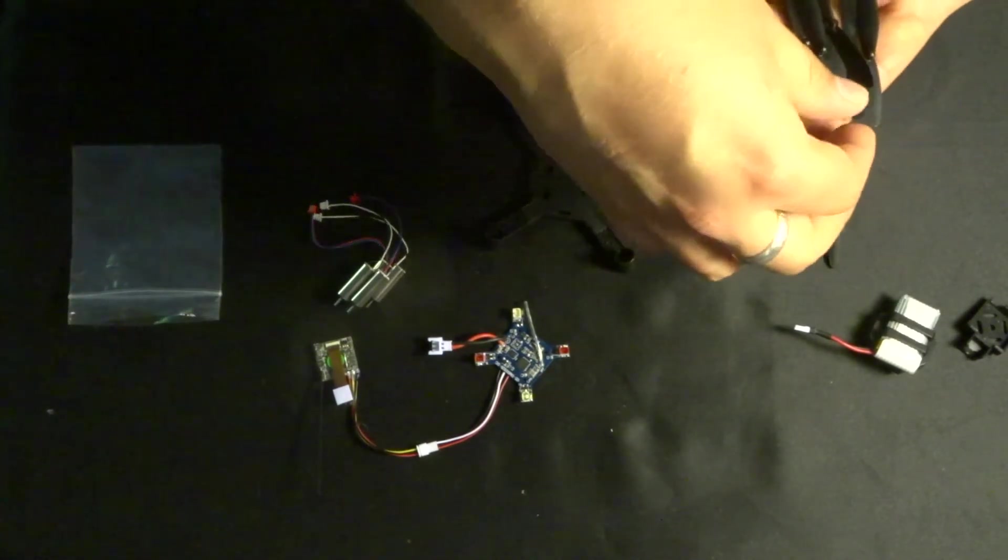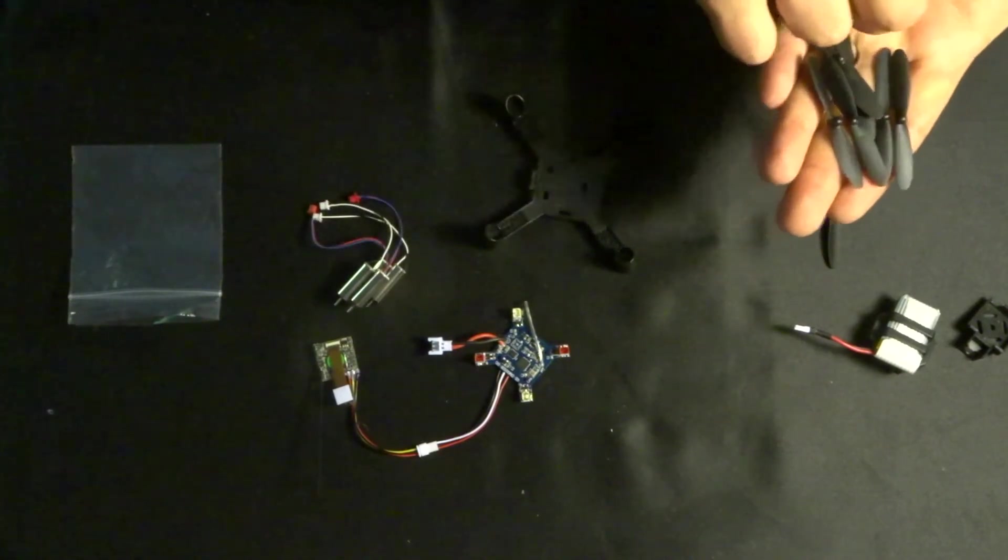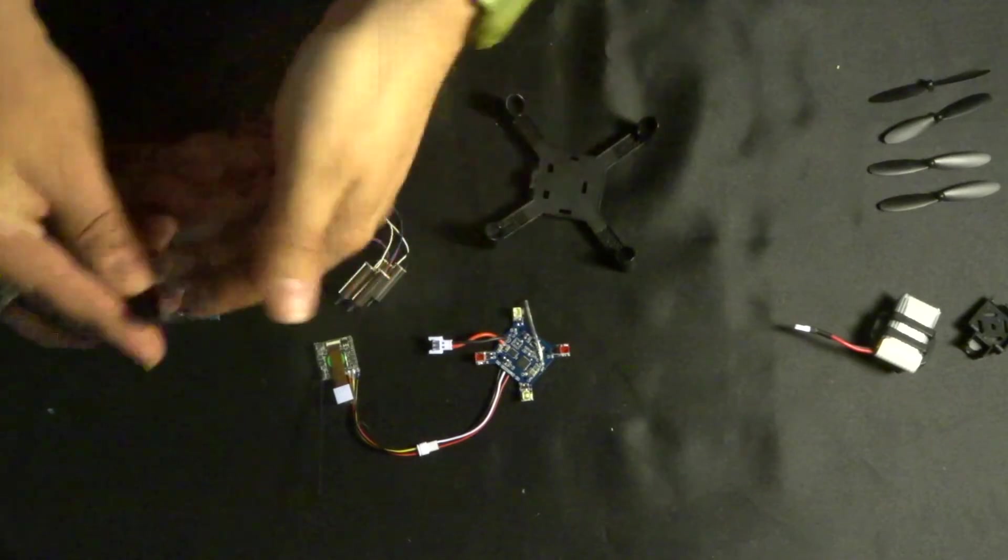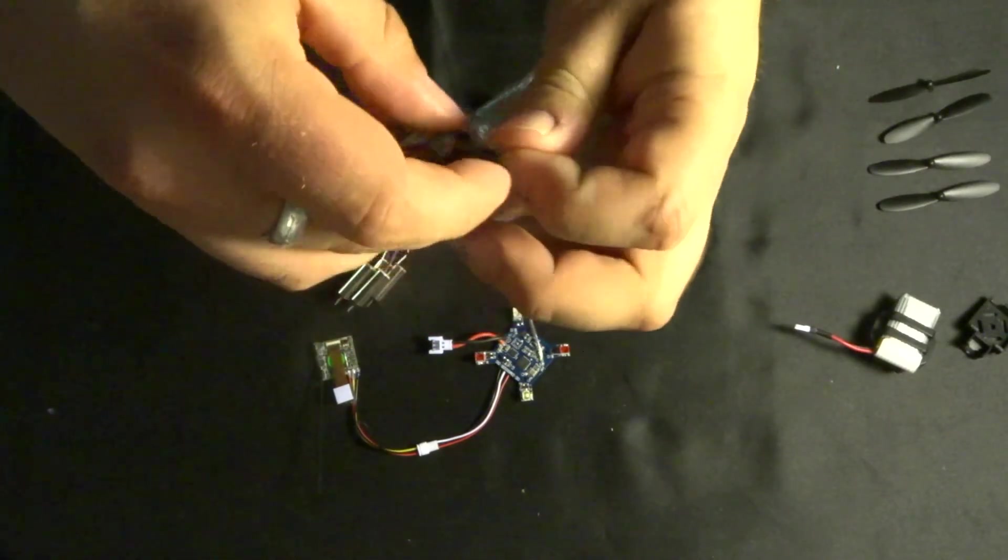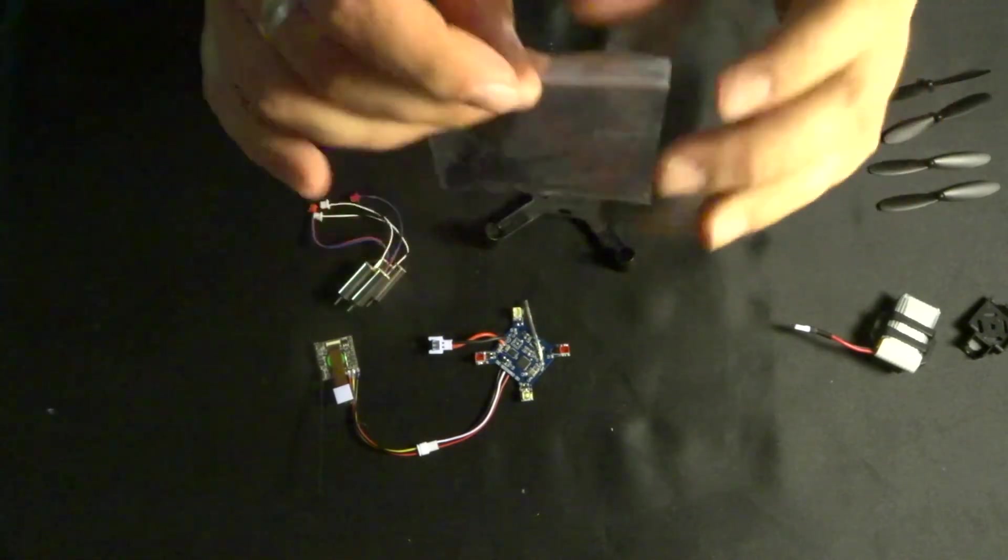Ah, these are quite nicely marked, so we've got A1. Let's put these other four propellers back in here as well, that'll keep them nice and safe, put them back in the box.